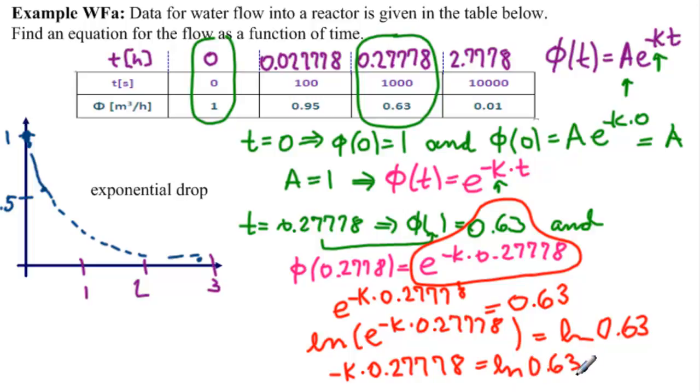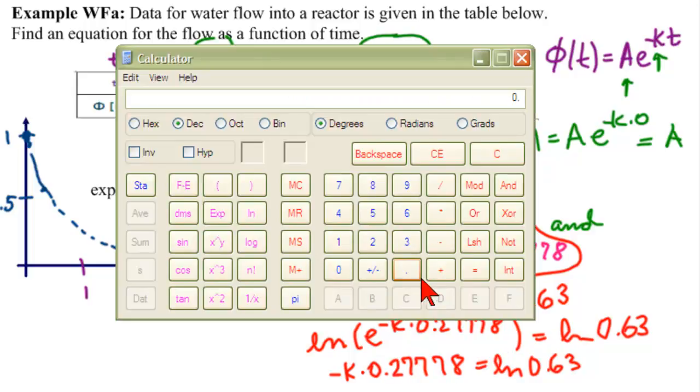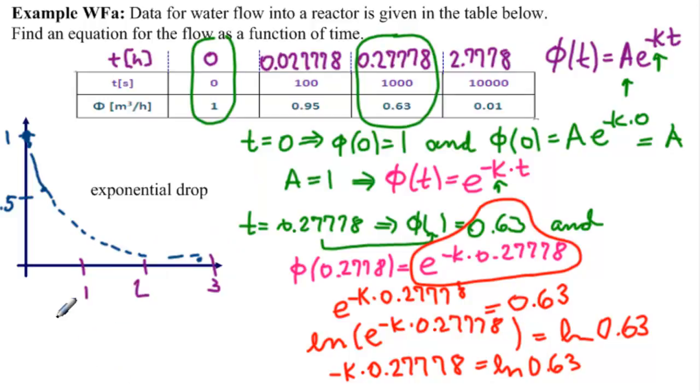So we're going to find ln of 0.63, divide it by that to get minus k. So 0.63, Ln on this calculator, and then divided by 0.27778, equals minus 1.66. So minus k equals minus 1.66.